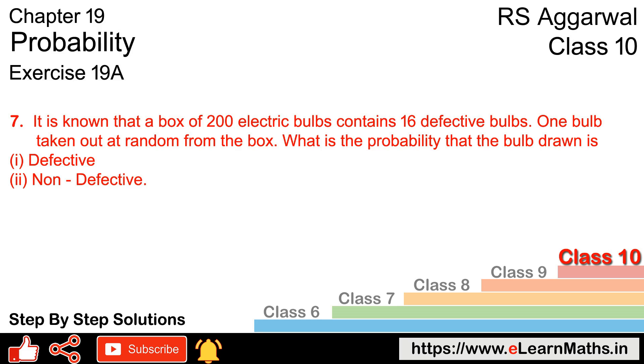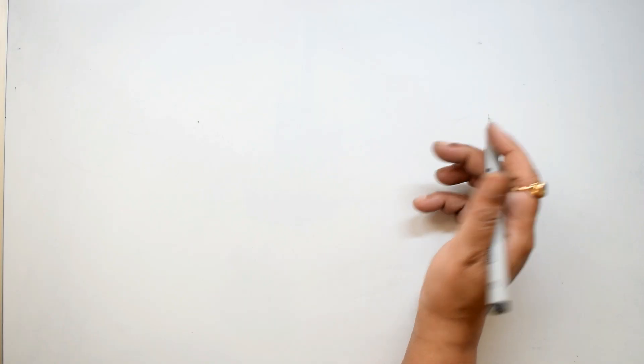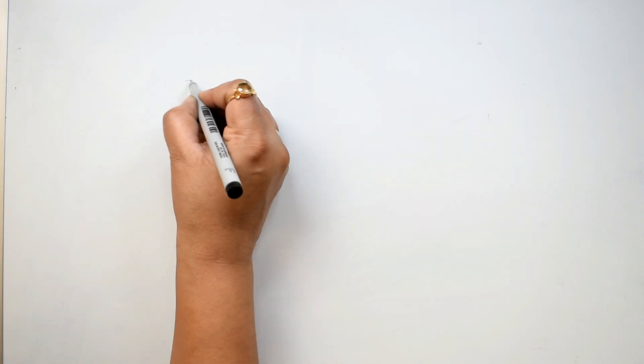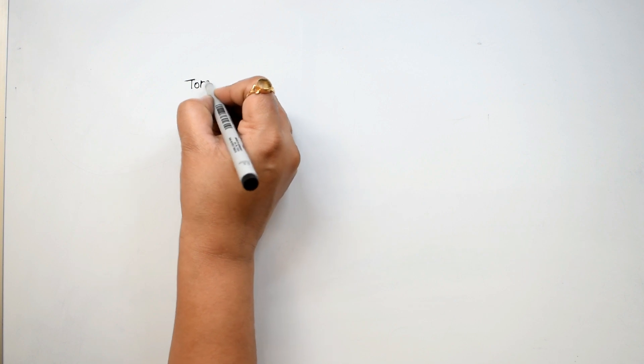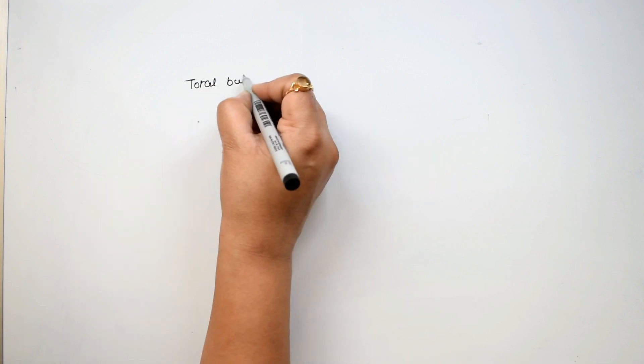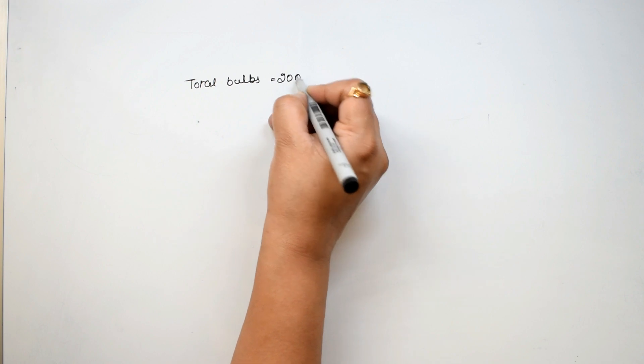Let's do question number 7 of exercise 19A, that is probability. Question number 7 is: it is known that the box of 200 electric bulbs contains 16 defective bulbs. Total bulbs we have 200 and 16 defective.